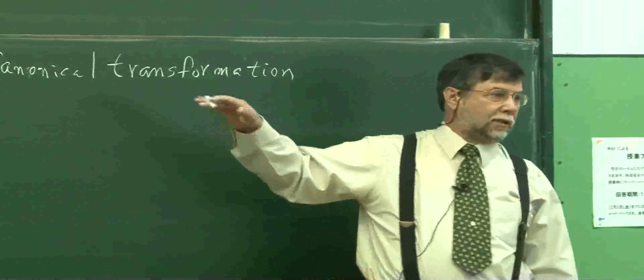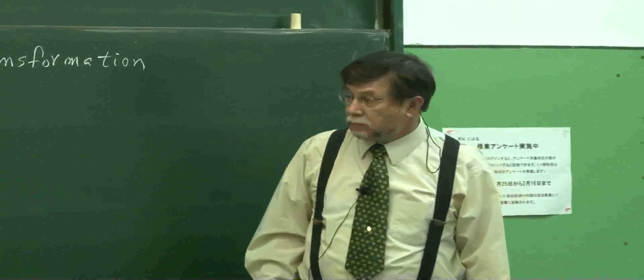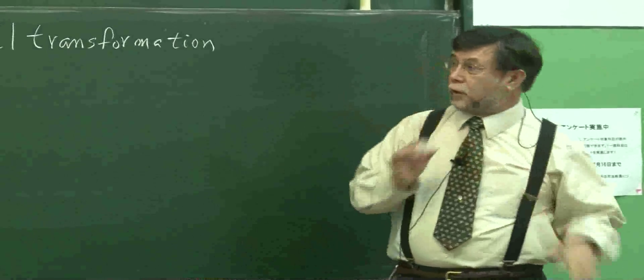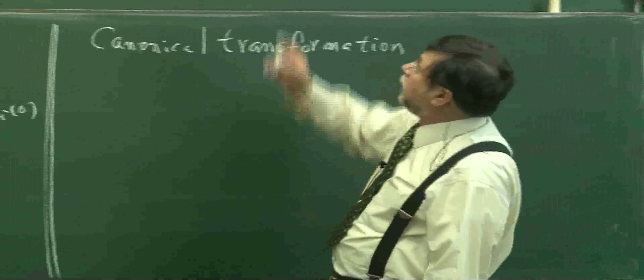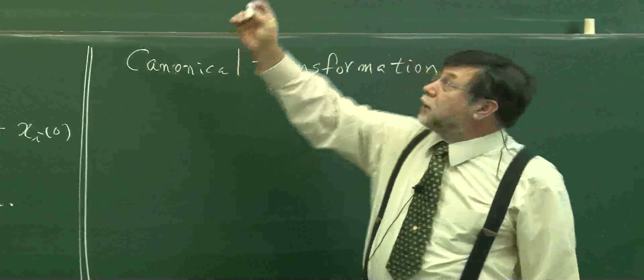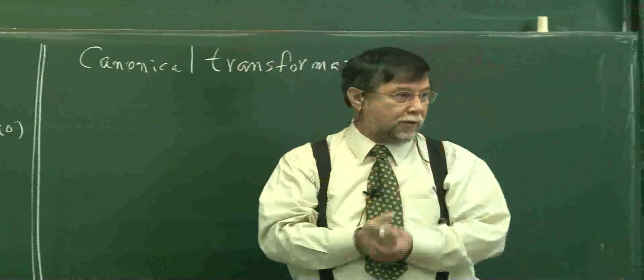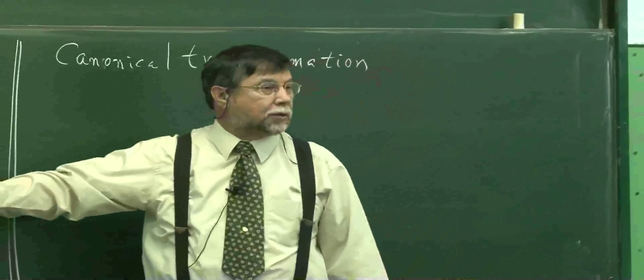This is now the second stage. Look, in the beginning, suppose your Hamiltonian depends on coordinate and momentum, both. Therefore, you cannot solve this way.